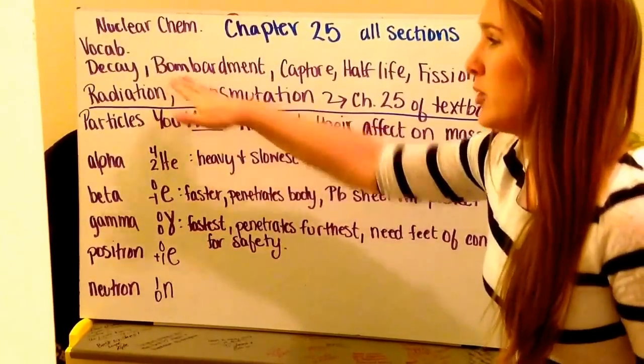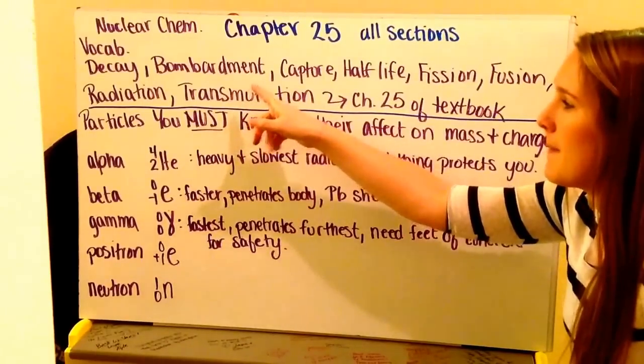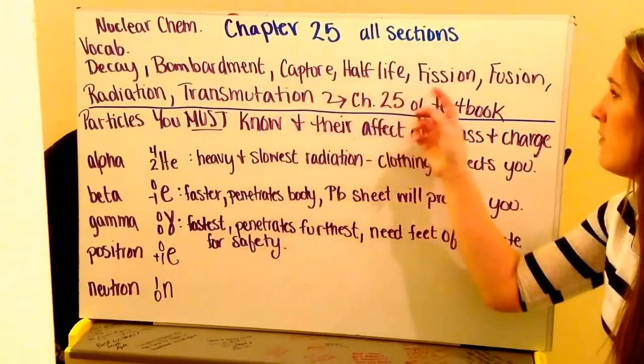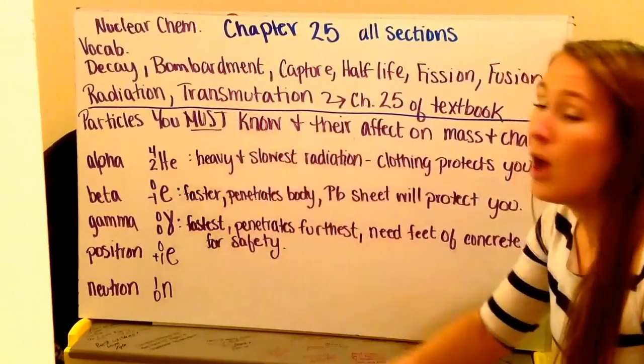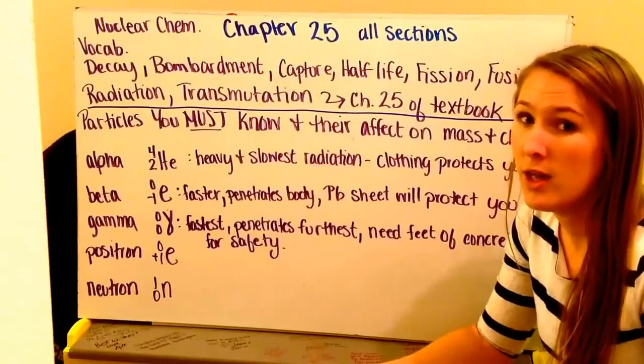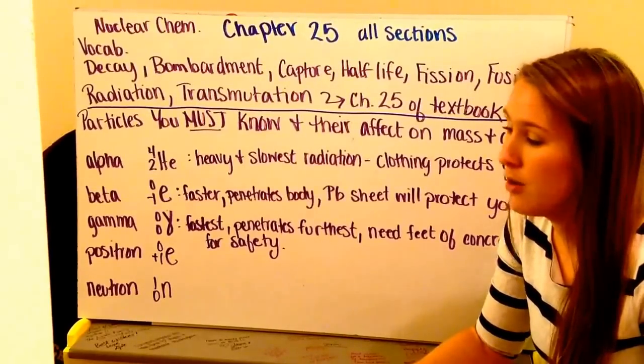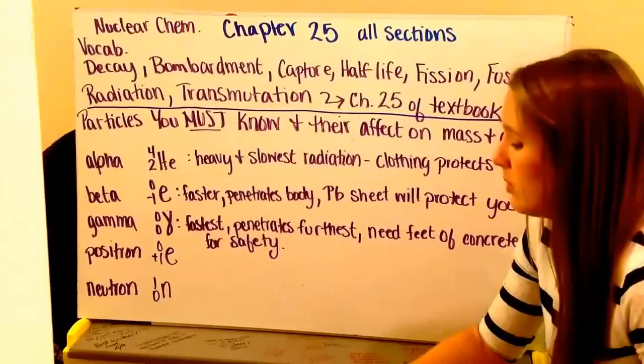You have some vocabulary words to start off your notes: decay, bombardment, capture, half-life, fission, fusion, radiation, and transmutation. All these definitions will come out of your textbook. You can look in the glossary or the index to figure out what section they are in and identify what those words mean.